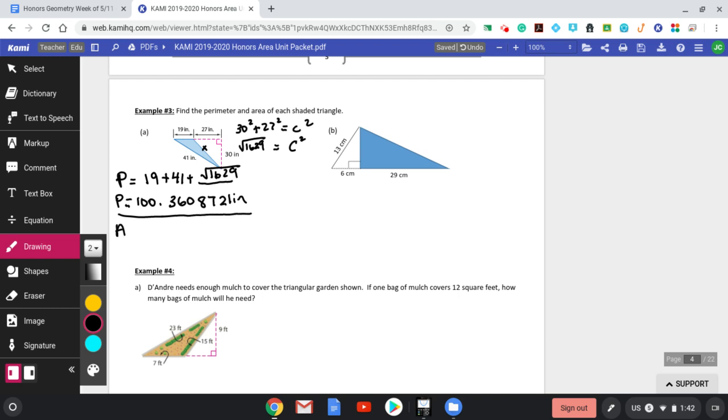Alright. So off to the side, I could say 30 squared plus 27 squared equals C squared. C squared here, guys, ends up being the square root of 1629. And if you check that, that's not a perfect square. So all I'm going to do is leave it like that. I'm going to keep it the square root of 1629 in my answer. Alright. There are no rounding directions here. So what I always say is if there's no rounding directions, write out the full calculator display. You can't go wrong. So there's no rounding directions. I do 19 plus 41 plus the square root of 1629. And I end up with 100.3608721 inches. So just write it all out.